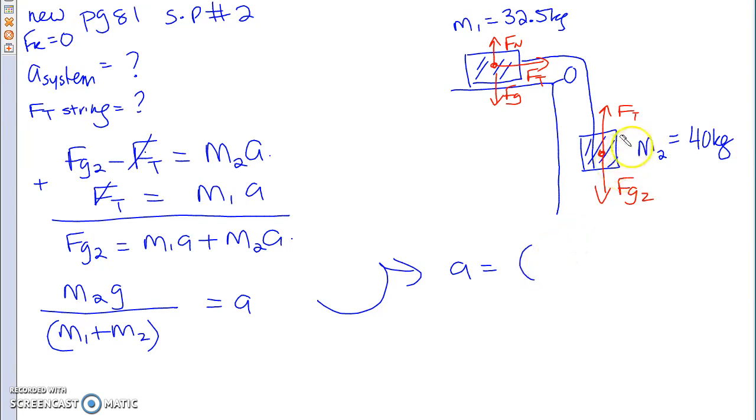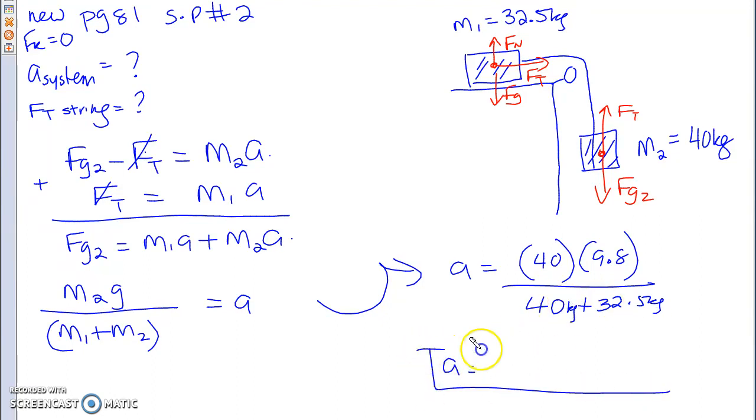A equals to mass 2, which is 40 times 9.8, divided by 40 plus 32.5 kilos. What is your acceleration of this system? 5.41 meters per second squared. As I said, for this mass, it's going to be downward. For this mass, it's going to be forward. So that's my acceleration of my system. That's the first question that has been solved.